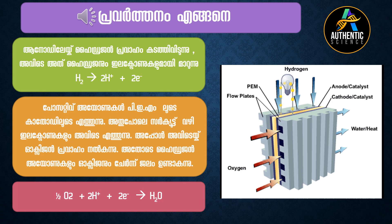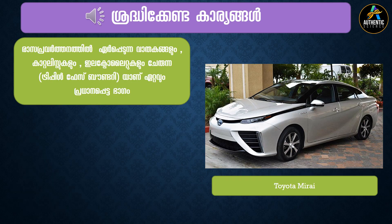This electricity, or current, is generated by the system. The oxygen system combines with hydrogen ions. Hydrogen ions react with oxygen, and the key components include a catalyst, electrolytes.